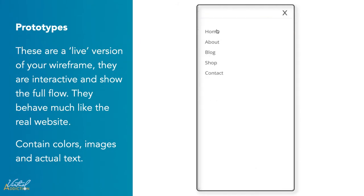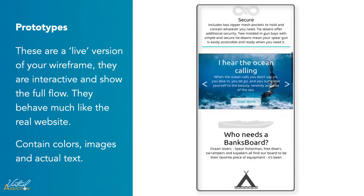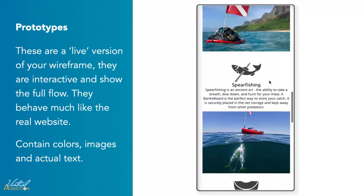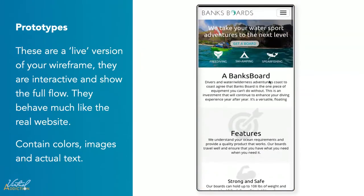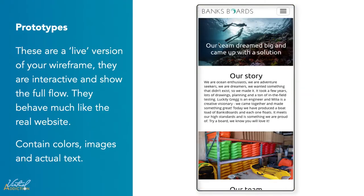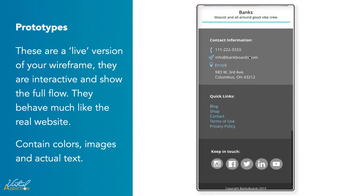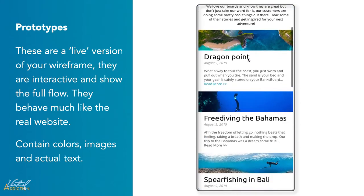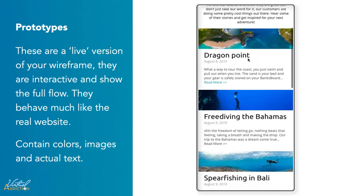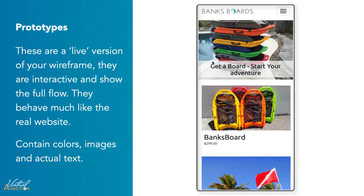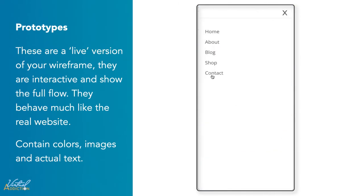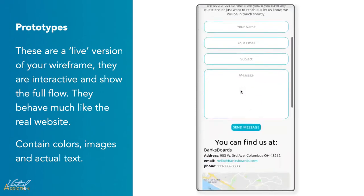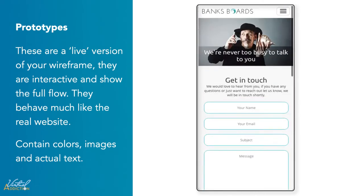Finally, we have prototypes or finalized comps. These act as the live version of the wireframe, bringing the product to life and showing the full flow alongside real content and finalized copy. Prototypes range in their level of sophistication, from elaborate website mockups to UX prototypes that are created with code. These will truly behave and feel like the actual product.